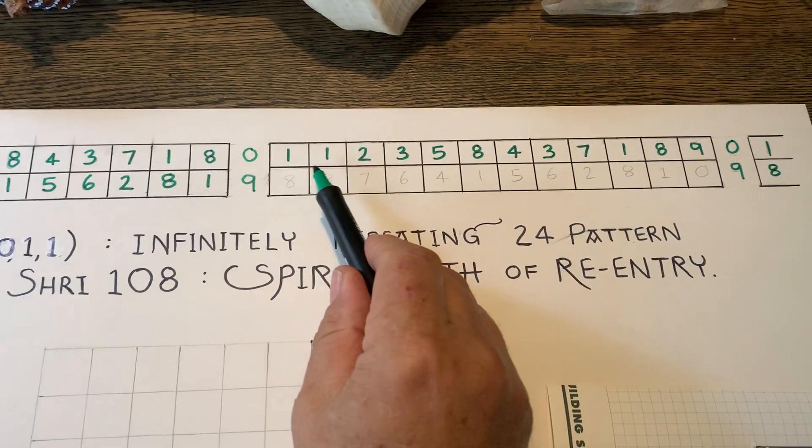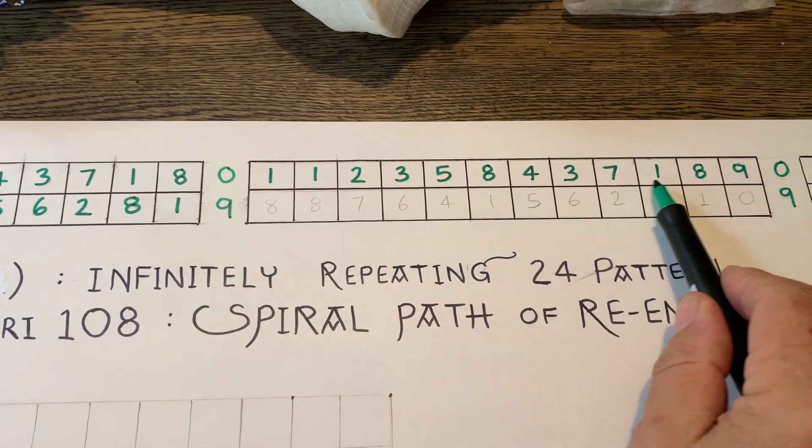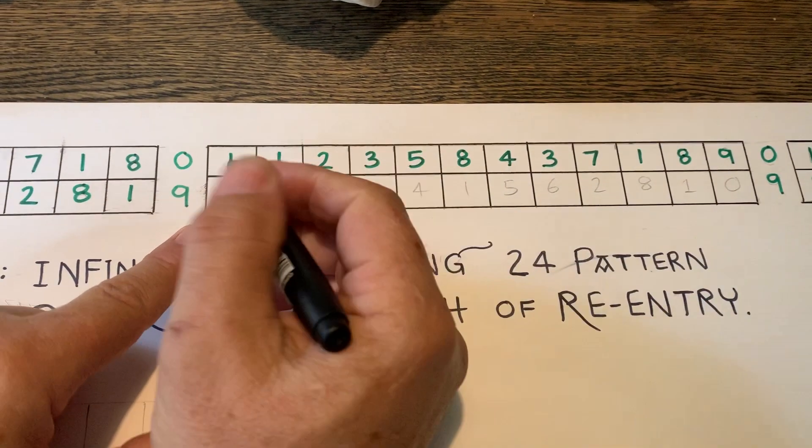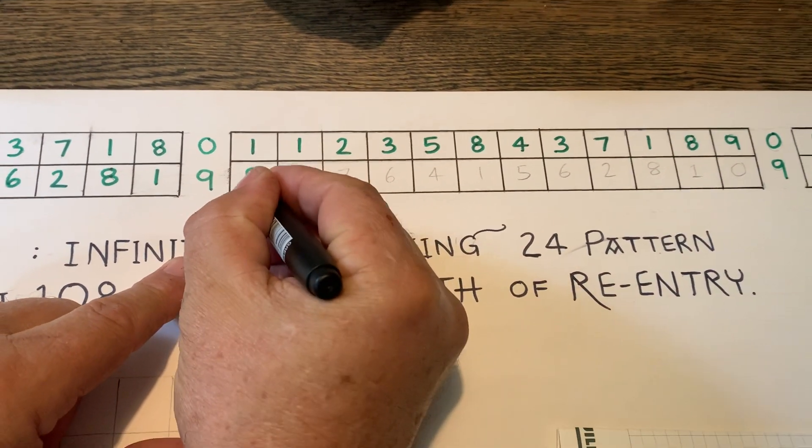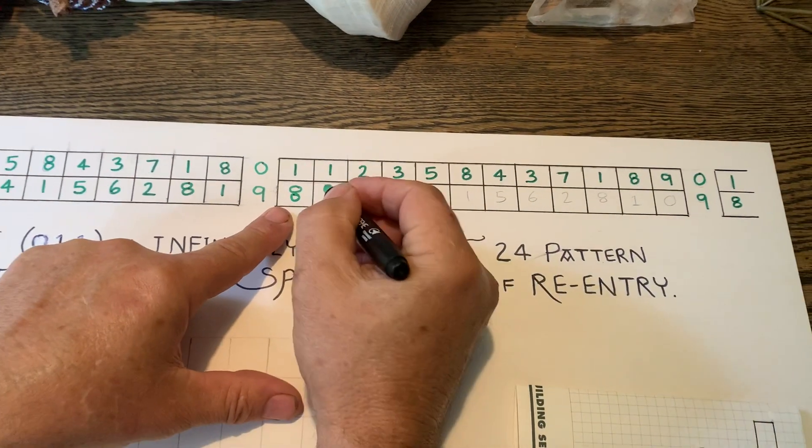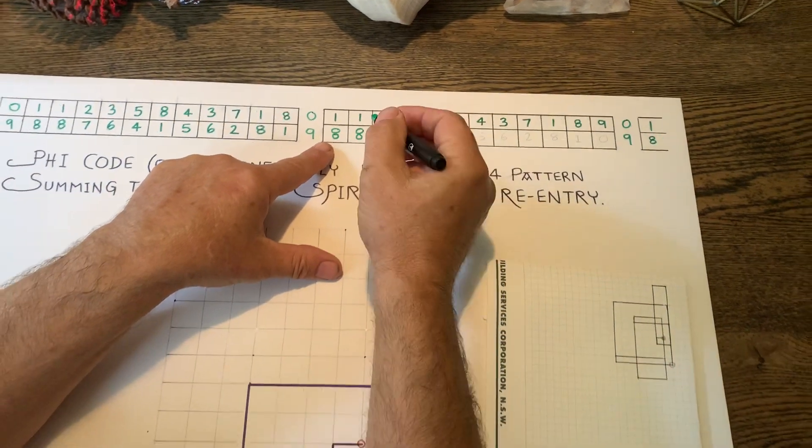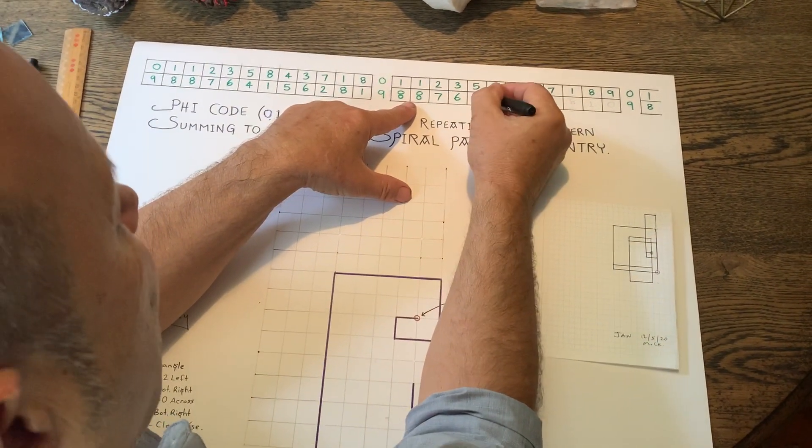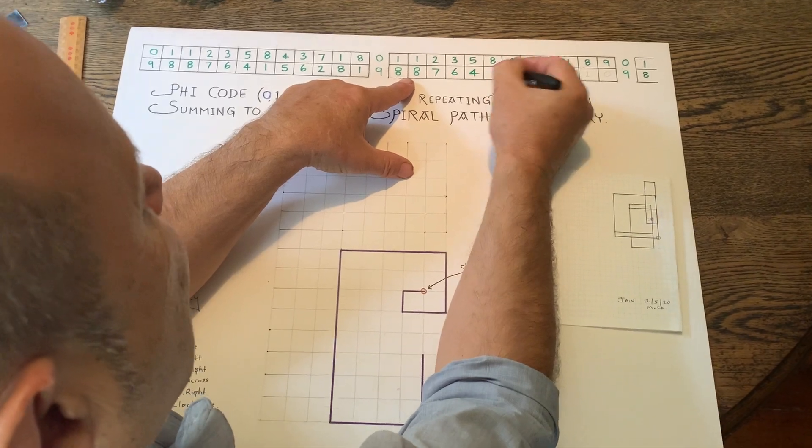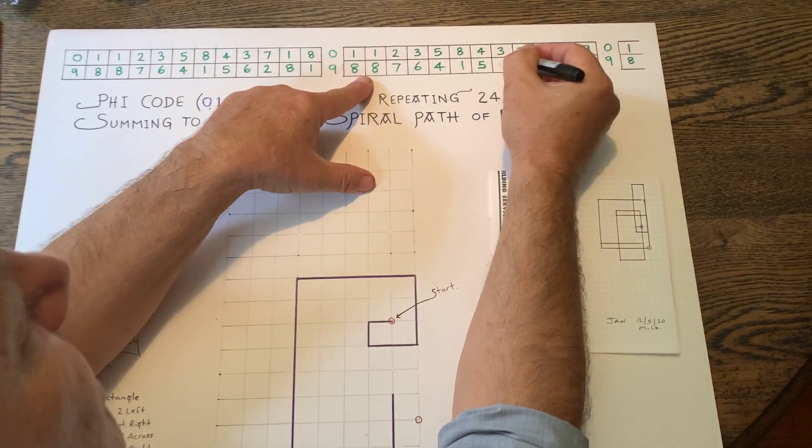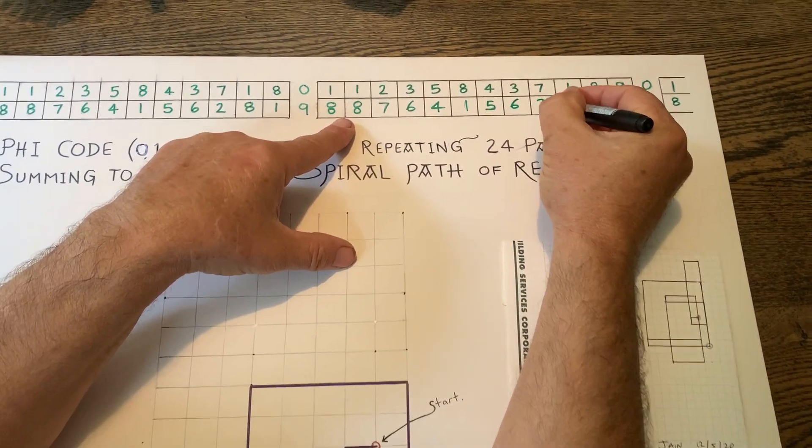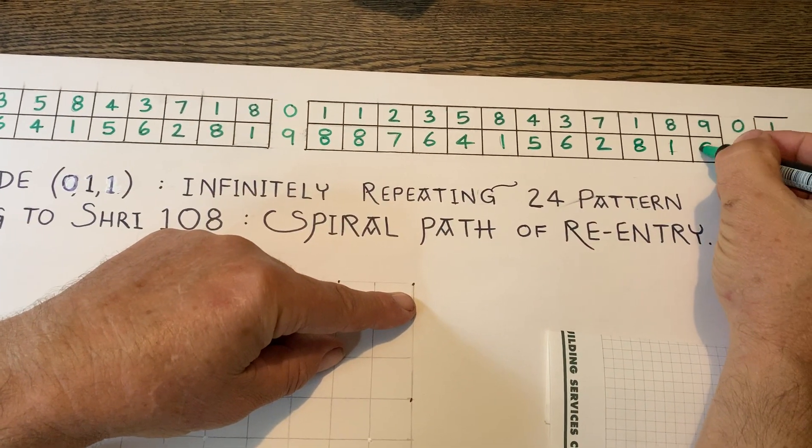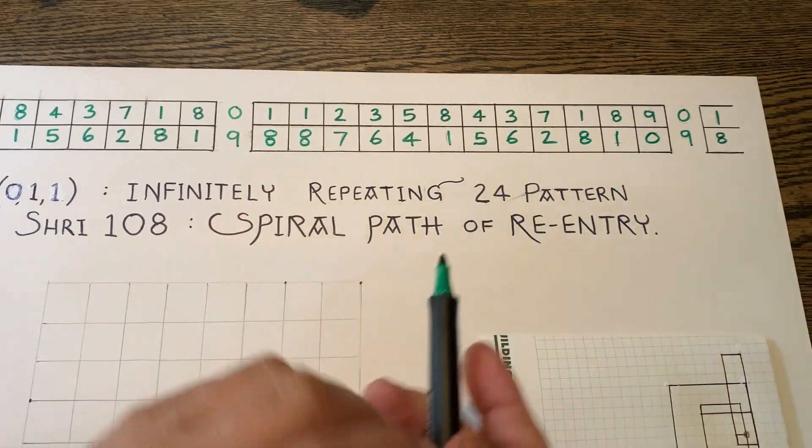So the pattern goes one, one, two, three, five, eight, four, three, seven, one, eight, nine. Now over in this column here, I'm going to write all the pairs of nine, one and eight. So that to complete this 24 pattern, we've got two and seven, just observe how all the pairs add up to nine, because nine is that which underpins all creation. It reveals all the symmetry. And then it goes like this forever.